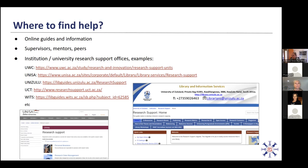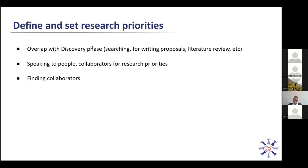There are also institutions and universities that have research support offices, and we've listed some of these here. Moving on to defining and setting research priorities — many of the tools for this step overlap with the discovery phase, which will be discussed shortly, such as tools for searching for literature, data, or tools for writing. In order to define and set your research priorities, you do need to do some research, but those tools will be discussed in the discovery phase.